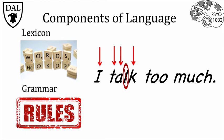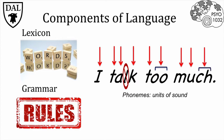In the word to, there's a T sound and an OO sound from the two O's. Much starts with the M sound, then U, followed by the CH sound. These are called phonemes, the smallest units of sound in a language.